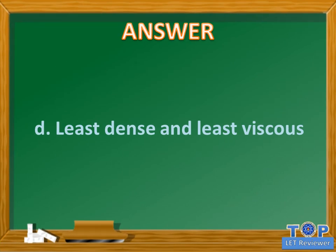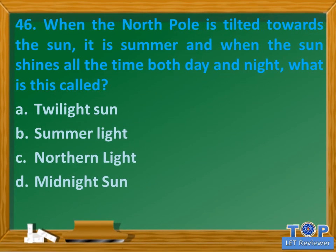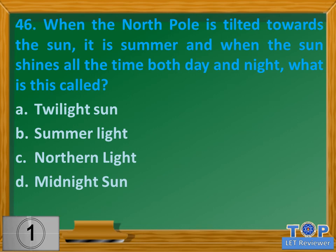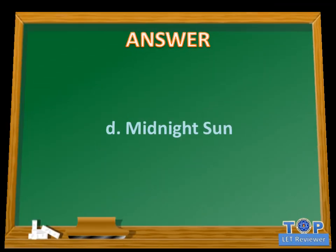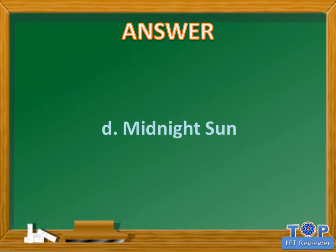Question number 46. When the north pole is tilted towards the sun it is summer and when the sun shines all the time both day and night, what is this called? A. Twilight sun. B. Summer light. C. Northern light. D. Midnight sun. Answer: D. Midnight sun.